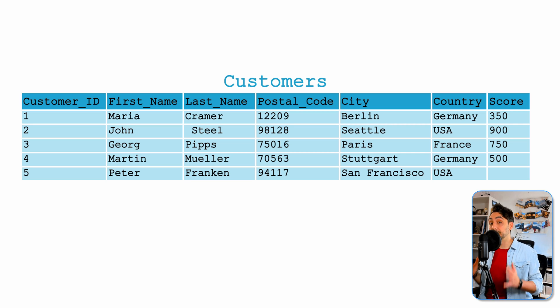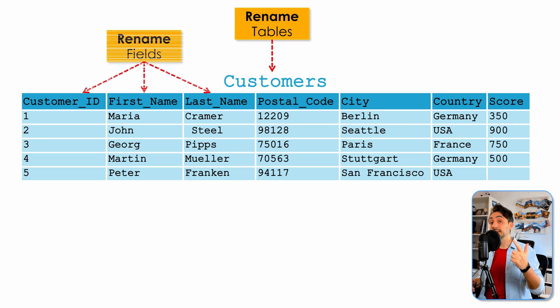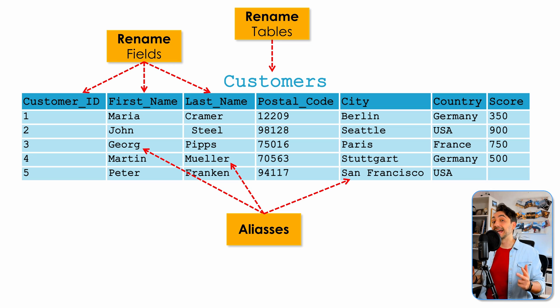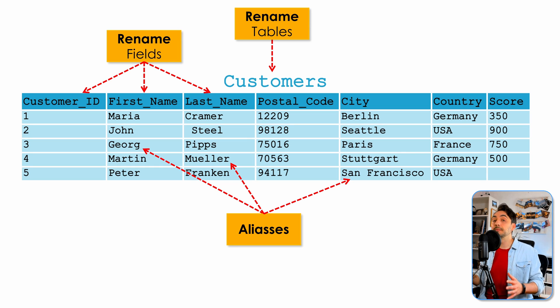Now let's say that you decided together with your users and the project team on a specific naming convention which is different from the one that Tableau uses. In Tableau we can do the following changes on the table: we can rename the table itself, rename the fields inside the table, and we can even change the values inside these fields, also known as aliases. In this tutorial we're going to focus on renaming the fields and renaming the tables.